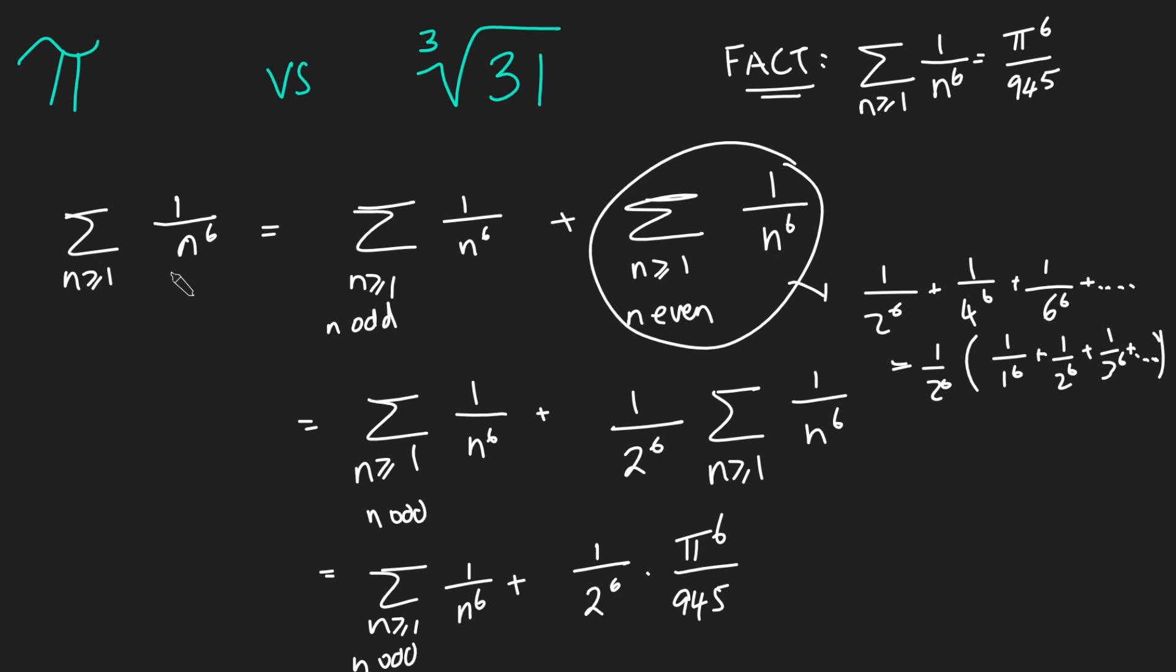And now this left hand side is this but that is just pi to the 6 over 945. And so now we can just rearrange this to make this the subject and just using some relatively simple calculation. You don't really need a calculator for this. But just rearranging this you get that the sum from n is 1 to infinity of 1 over n to the 6 just when n is odd is going to be pi to the 6 divided by 960. So just by rearranging this equation here and you can check that for yourself you get this result here.